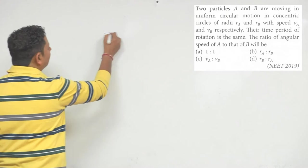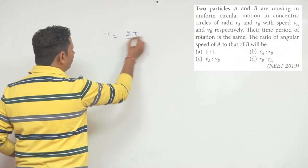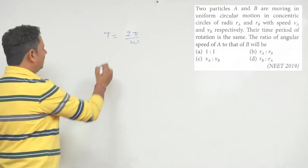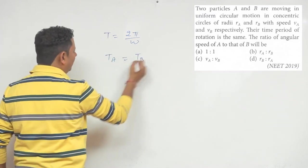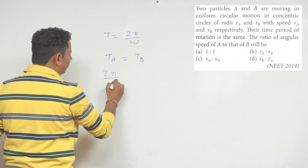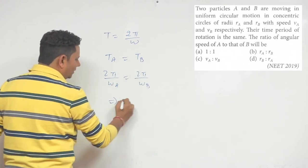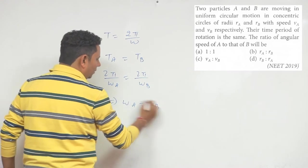Now time period T is equal to 2π by ω. The time period same means that we can say TA is equal to TB. 2π by ωA will be equal to 2π by ωB, which implies ωA will be equal to ωB.